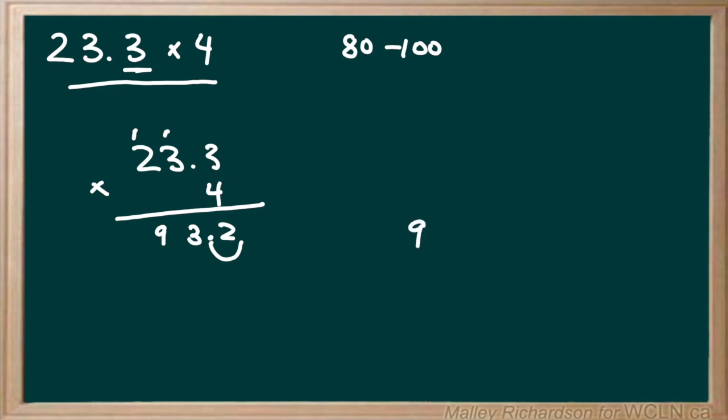So our final answer is going to be 93.2. And then we can ask does this make sense? And it does because 93.2 is greater than 80 but less than 100. So 93.2 makes sense as our answer.